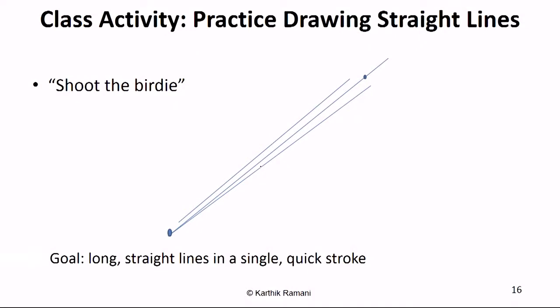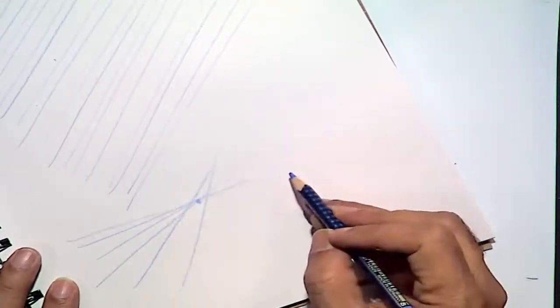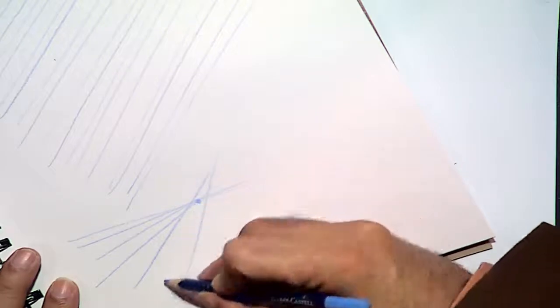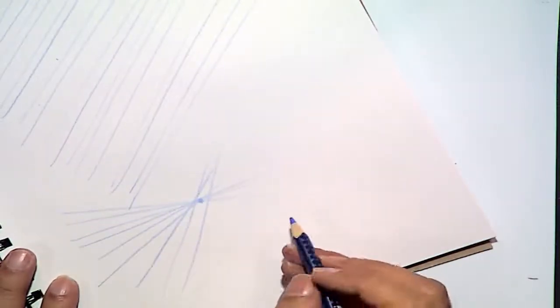So draw a dot and draw straight lines all going through that dot. It could be like here. If you miss it, it doesn't matter. Just shoot the birdie. So it's just practice to draw lines through a dot here. Just keep trying that out.